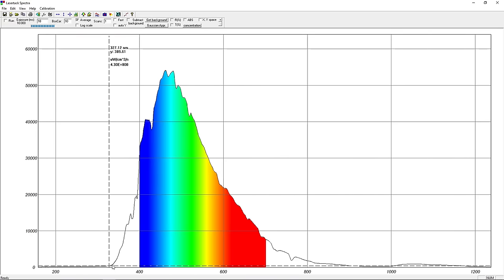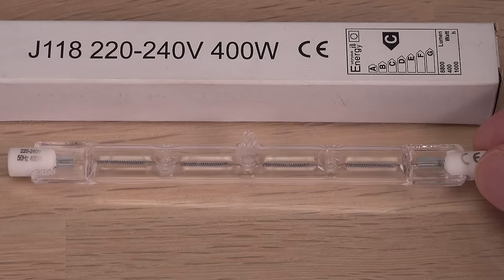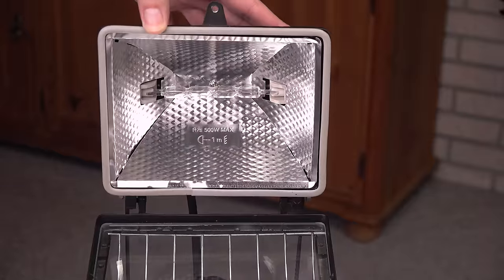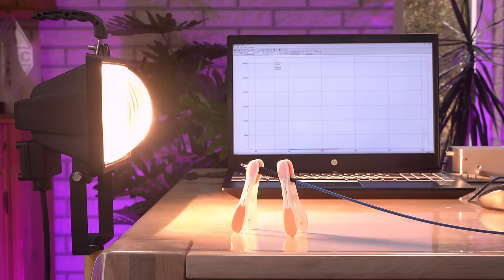However, soda lime glass will not handle fast temperature changes as well, so the halogen bulb itself is made of quartz glass instead. And quartz glass does transmit the UVB and C coming from the filament. That's why you need the extra glass to be intact.